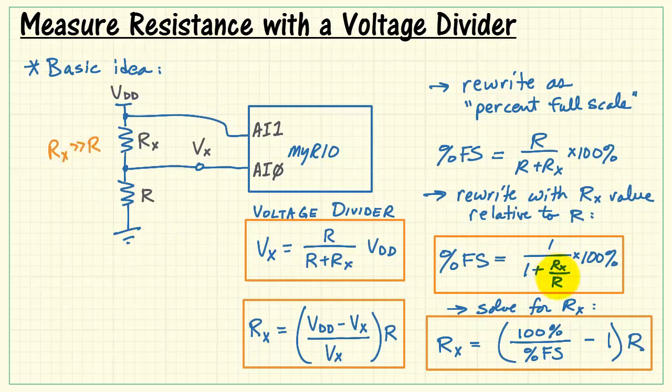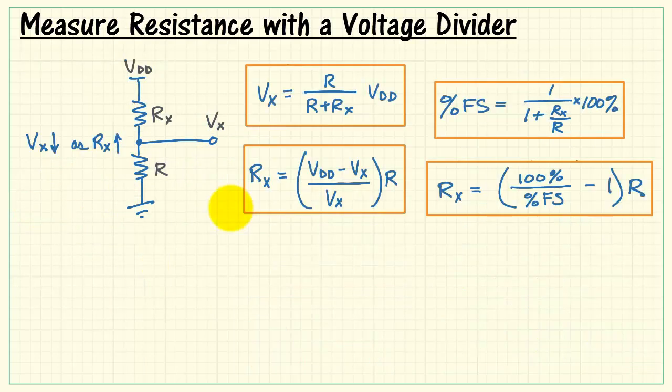Finally, if Rx is much larger than R, then this term dominates the denominator, and everything tends towards 0, and the output is approximately 0% full-scale. So thinking about these three different cases, we can conclude that Vx goes down as Rx goes up.